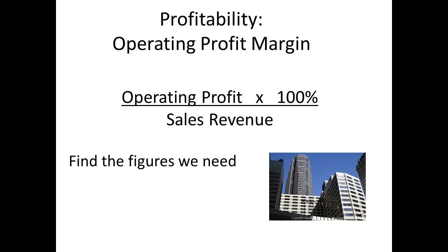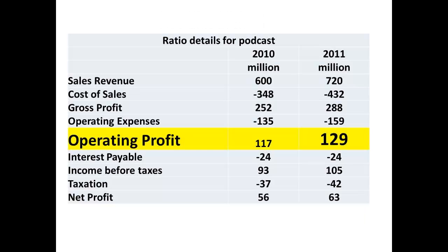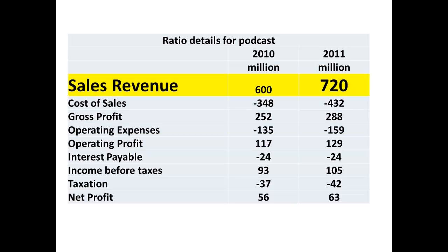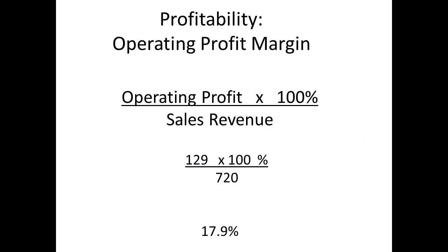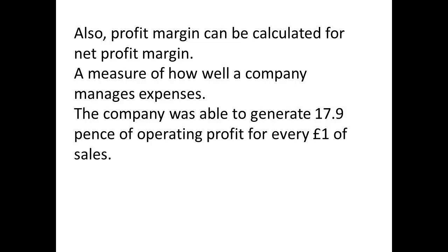The next ratio is the operating profit margin, being the operating profit divided by the sales revenue. The operating profit of £129 million is obtained from the income statement. The sales revenue of £720 million is also obtained from the income statement. We put in these figures: 129 divided by 720, multiplied by 100 for the percentage. We have a figure of 17.9% as the operating profit margin. This ratio tells us how well the company is managing its expenses — for every £1 of sales, the company generates 17.9% of operating profit.